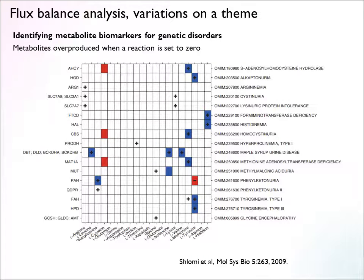There are also more qualitative applications of flux analysis. One example from a 2009 paper tried to identify biomarkers for genetic disorders using these models. You can computationally explore setting one reaction to zero — modeling the loss of an enzyme by a genetic mutation — and ask what will happen: will the model tend to overproduce some metabolite? If so, that metabolite might accumulate in a patient's blood and become a biomarker. Some predicted biomarkers overlapped well with known biomarkers from genetic databases.